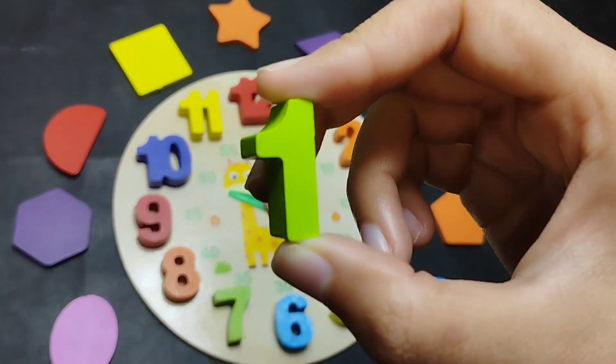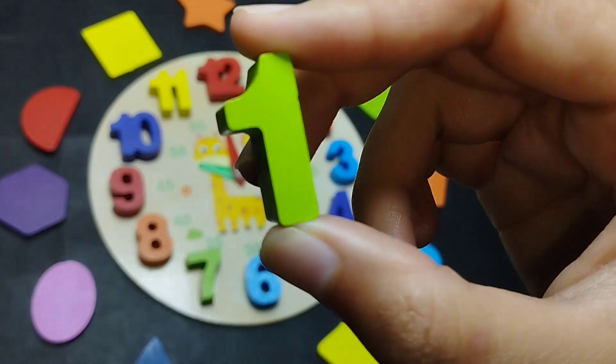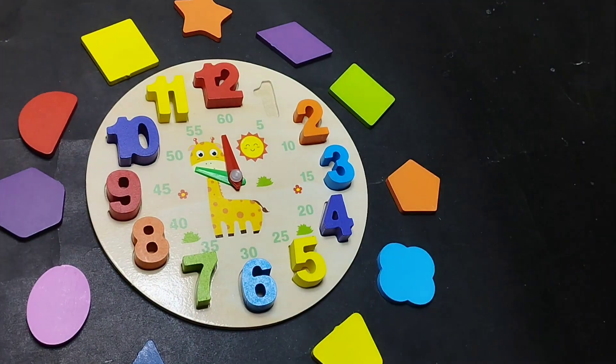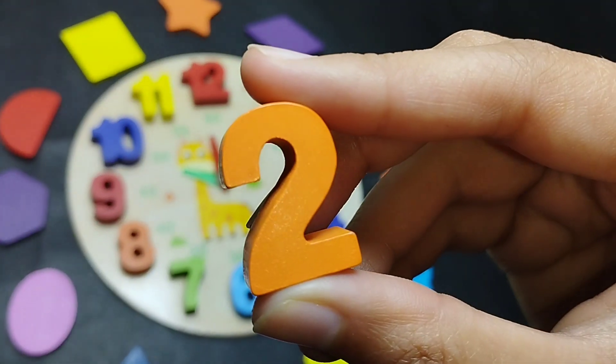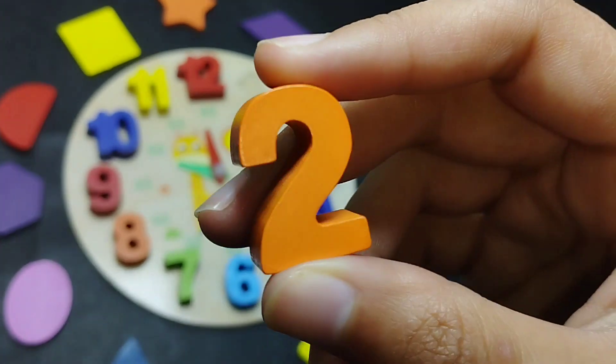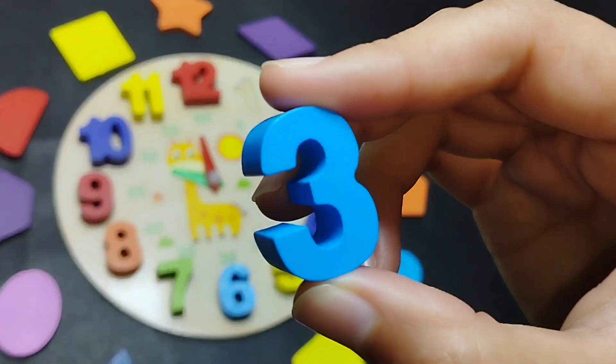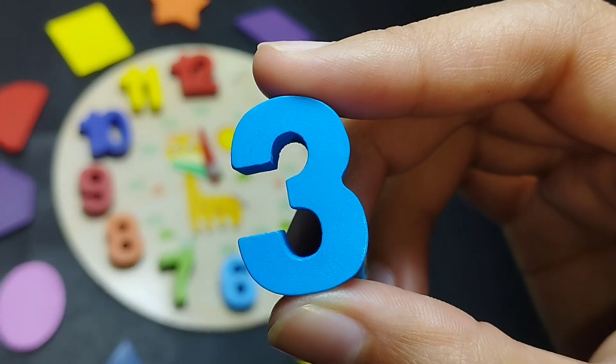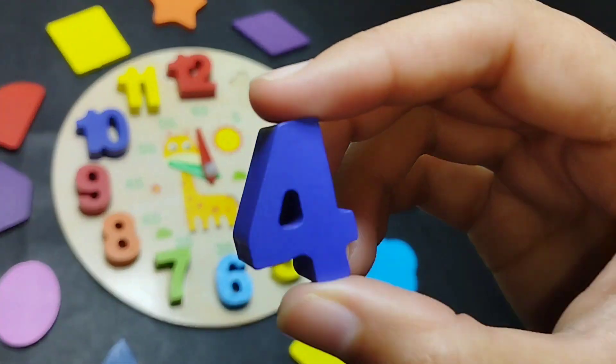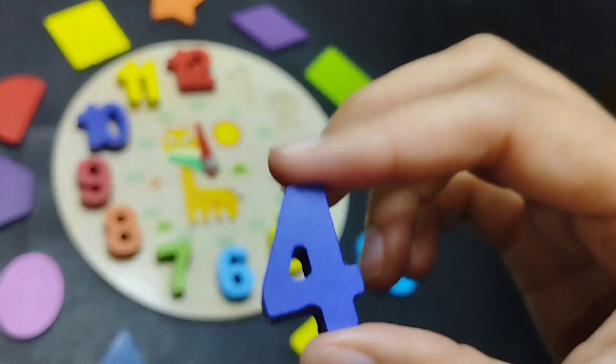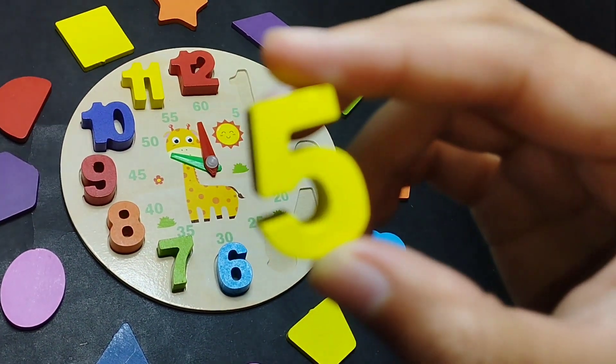Let's start. This is number one. Number two. This is number two. Number three. This is number three. Number four. Number five.